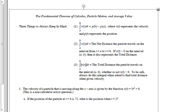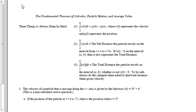Three things to keep in mind. First, the integral of v(t), which is velocity, dt from a to b, is equal to p(b) minus p(a), where v(t) represents the velocity and p(t) represents the position. Number two: the integral of v(t) dt from a to b equals the net distance the particle travels on the interval from a to b.